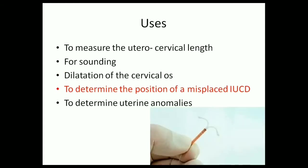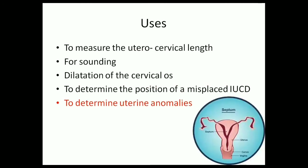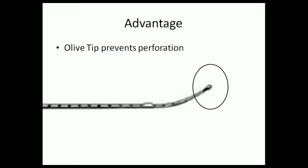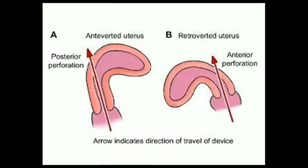Uterine sound can be used to determine the position of a misplaced IUCD — we insert a uterine sound and then take an x-ray to locate it. It is also used to detect any uterine anomalies like a septum. The most important advantage of a uterine sound is its peculiar olive tip that is rounded and makes it blunt to prevent perforation.